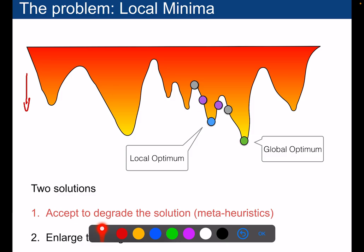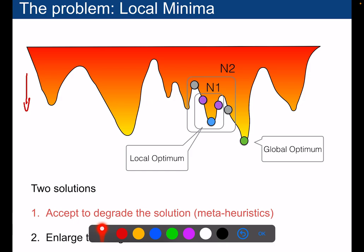But in this first part, we will only study how to accept to degrade the solution, and this will be done using meta-heuristics. So that's the first solution, you accept to degrade. And if you accept to enlarge a little bit the neighborhoods, you might be able to reach another solution.